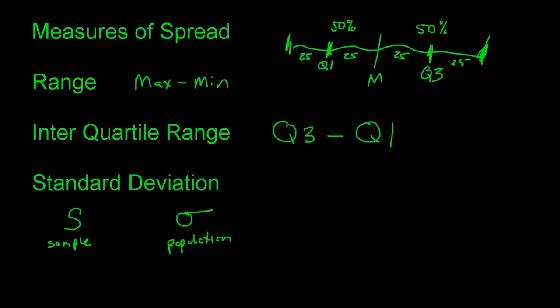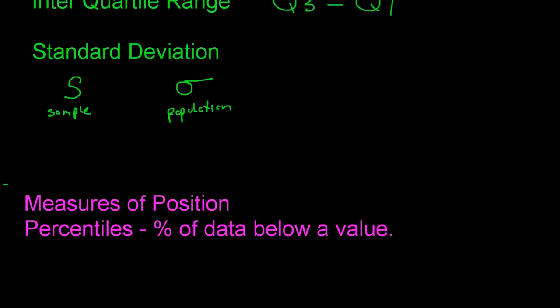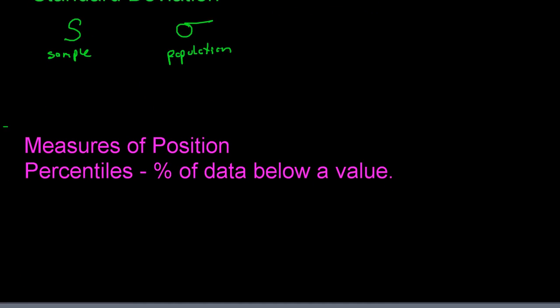A large standard deviation means most data is far from the mean — more spread out. A small standard deviation means most data is near the mean, clustering the data together.